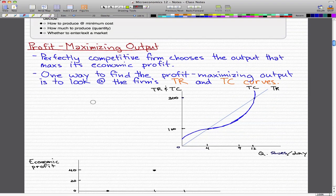In this video we're going to look at profit-maximizing output. A perfectly competitive firm chooses the output that maximizes its economic profit. One way to find the profit-maximizing output is to look at the firm's total revenue and total cost curve.